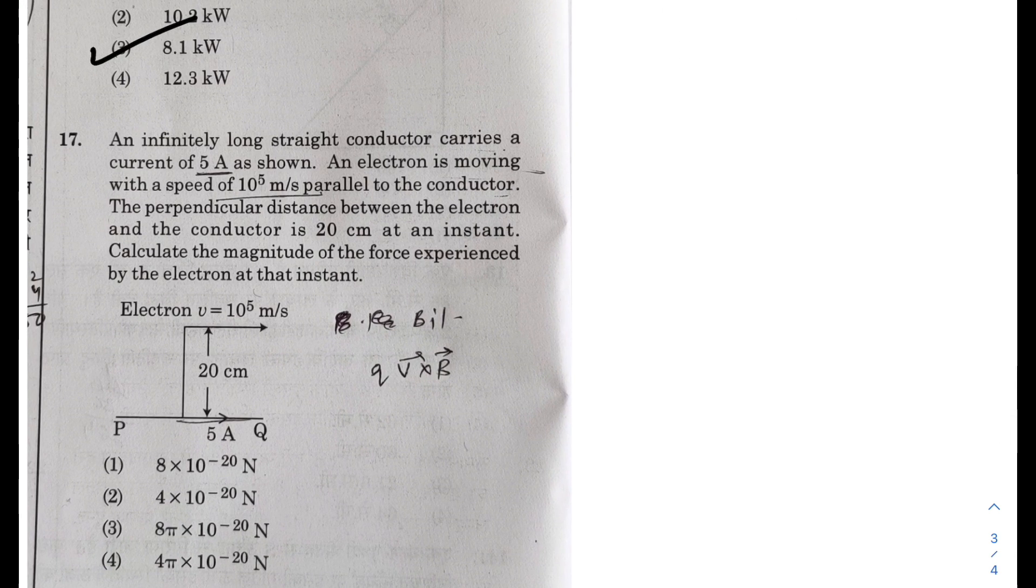Next, infinitely long straight conductor carries a current of 5 ampere. An electron is moving with a speed of 10 to the power 5 meter per second parallel to the conductor. The perpendicular distance is 20 centimeter at the instant. The force - we know the magnetic field due to this would be coming outwards, and because electron is going there, so V cross B comes downwards. So the electron will experience a force upwards, and because it is perpendicular, it would be eVB.